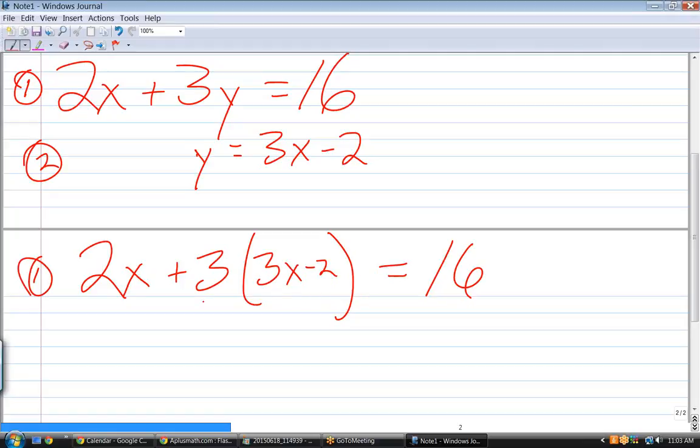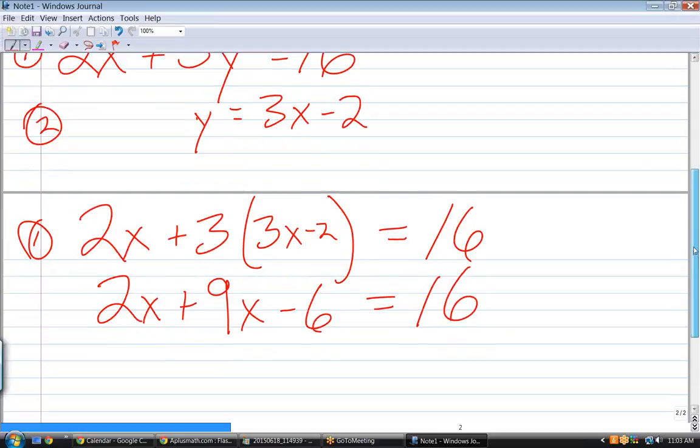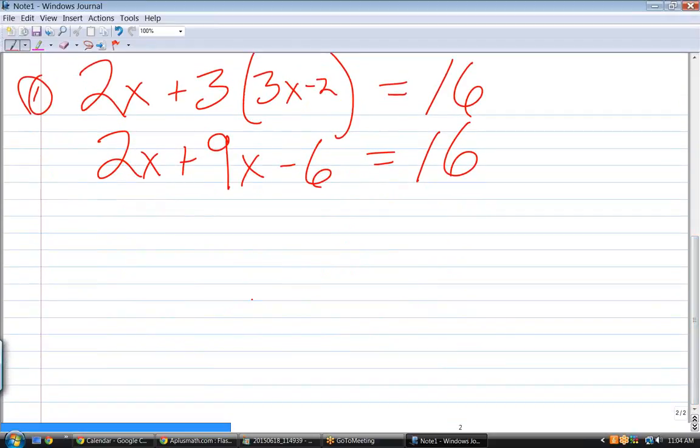Equation one now is one equation and one variable, so I'm going to be able to solve for x. Let's do it. Solve for x from equation one. What's the next line going to be? It's going to be 2x plus 9x minus 6. We add 6 equals 16. Boy, you are getting good at this. You're not only good, but you're quick.